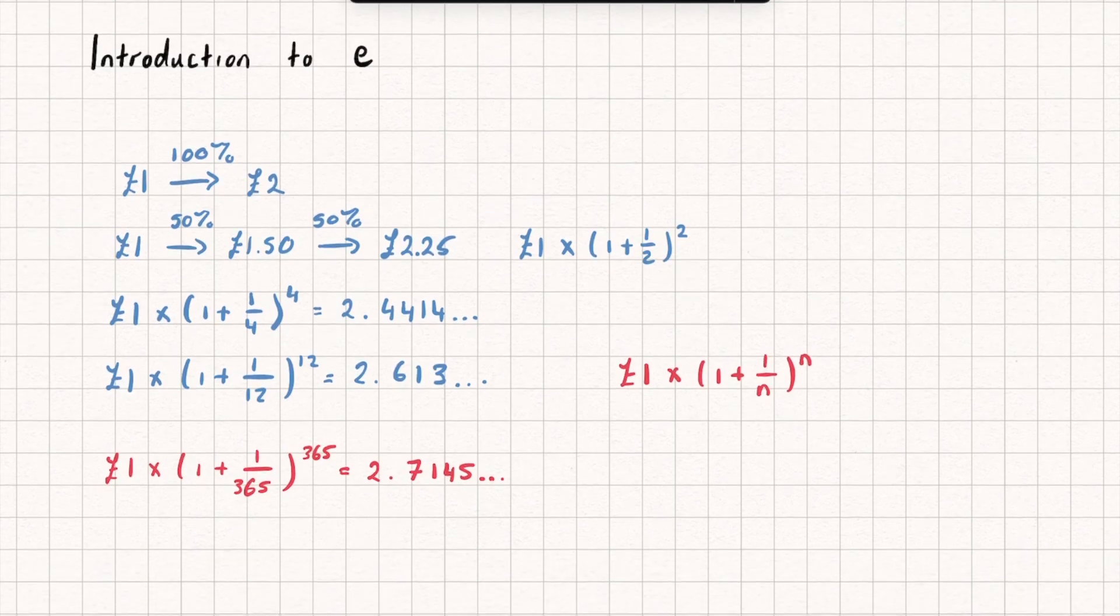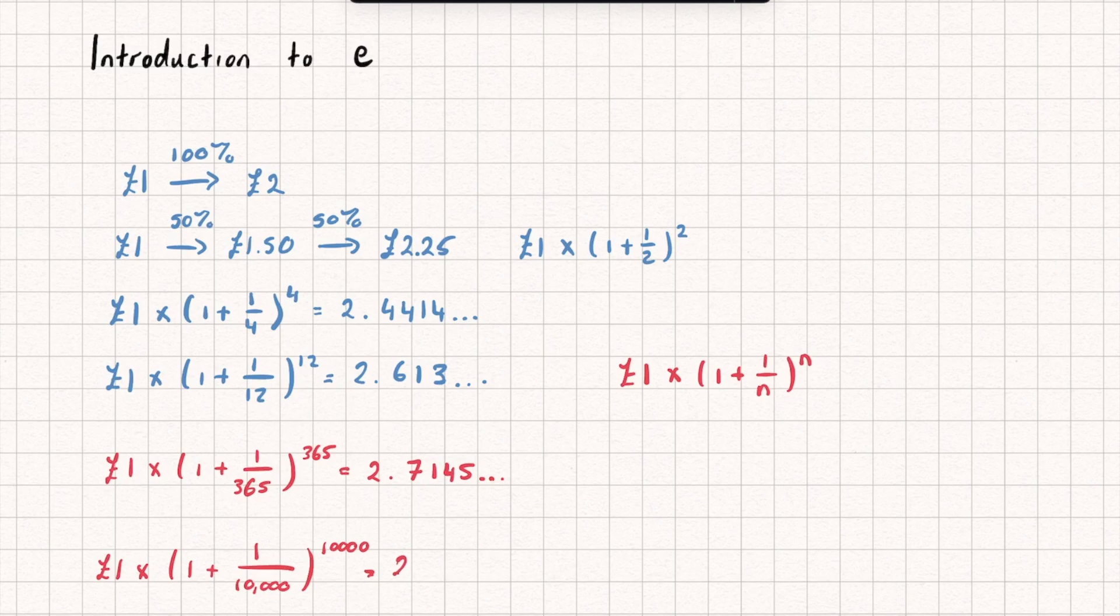And let's do one final example where I get say 10,000 instalments within the year. So it's 1 multiplied by 1 plus 1 over 10,000 to the power of 10,000. Let's see what this number is going to be. And it's 2.718 and again some more digits.